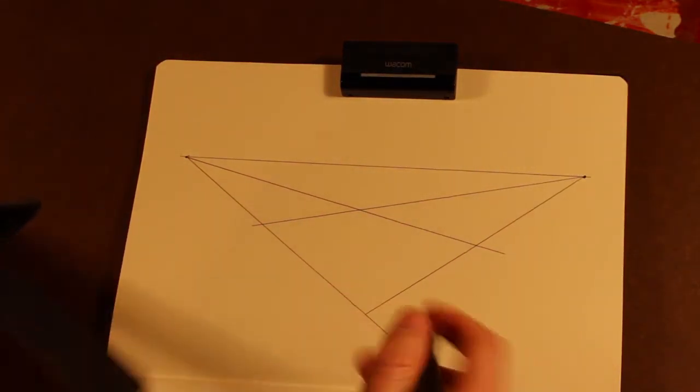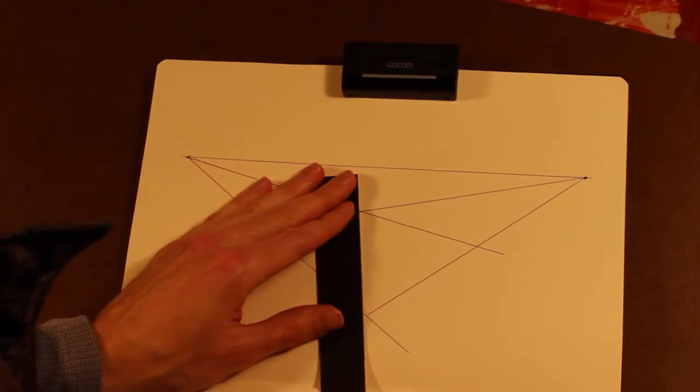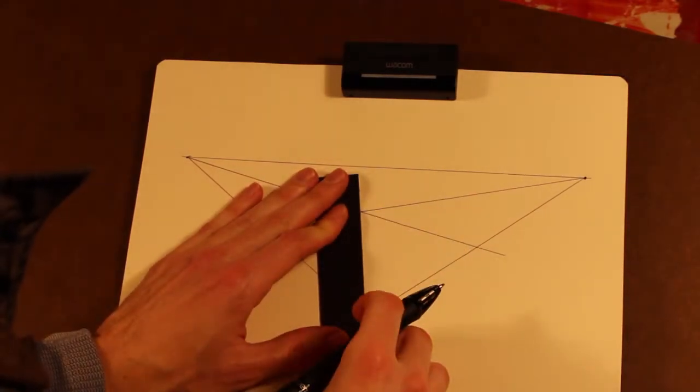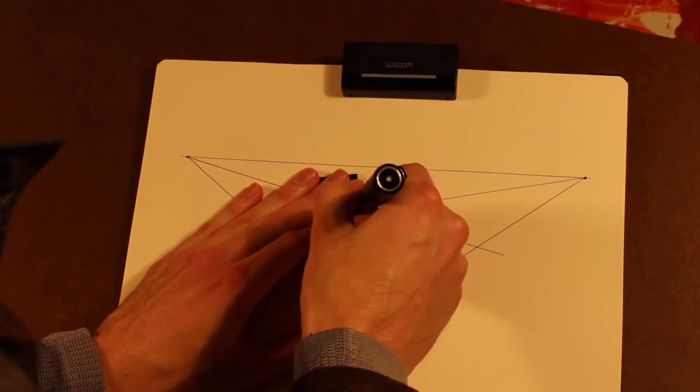So with this, we're still going to use the X method. We're just going to go corner to corner and draw a little X.